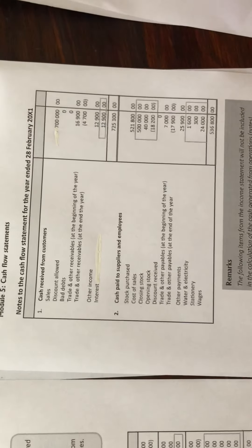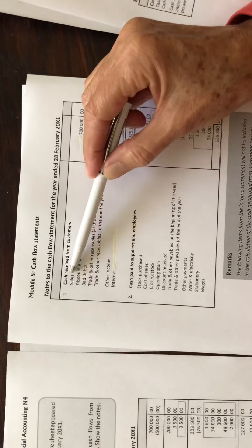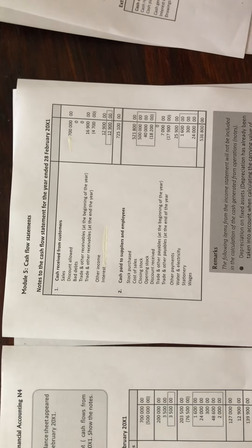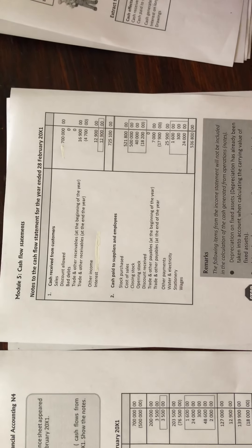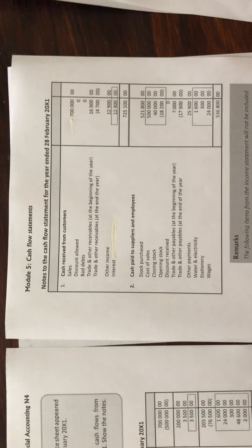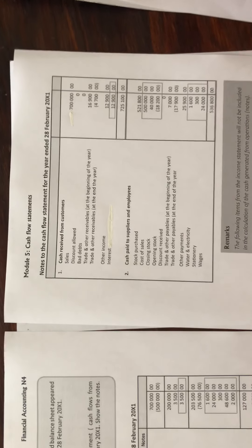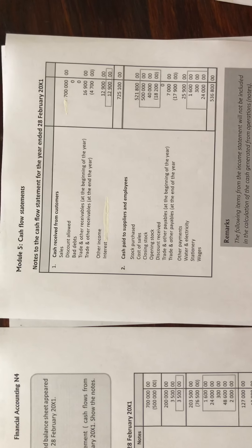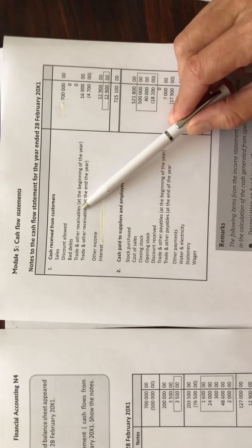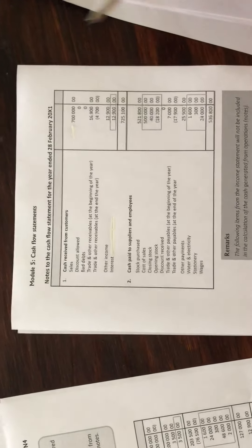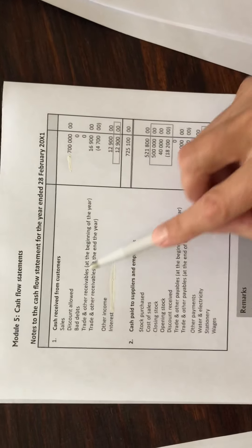There was no discount allowed in the income statement, so that is zero. There were no bad debts, so that amount is also zero. We need to do an adjustment on the sales because that sales amount includes both credit sales and cash sales, and we're only interested in the cash sales. So we need to take out the credit sales by taking the debtors — which are entered under trade and other receivables in the balance sheet — into account.